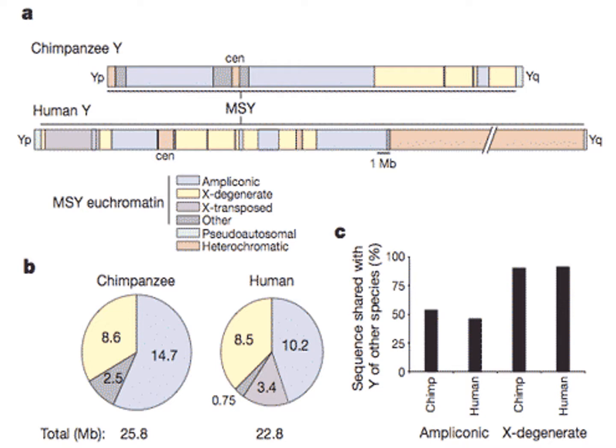Under evolutionary assumptions of long and gradual genetic changes, the Y chromosome structures, layouts, genes, and other sequences should be much more similar between the two species, given only 6 million years or so since the chimpanzee and humans supposedly diverged from a common ancestor. Instead, the differences between the Y chromosomes are marked.